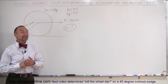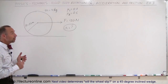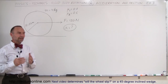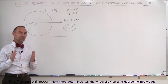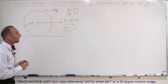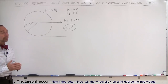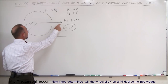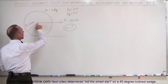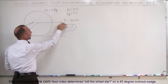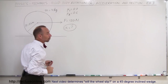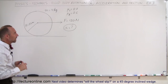Welcome to iLectureOnline. Here's another example of how to deal with rotating objects. This example is a lot like the previous one, except in this case we're going to apply a force directed from the center of the rotating wheel — 120 newtons — and we're trying to find the acceleration of this wheel.